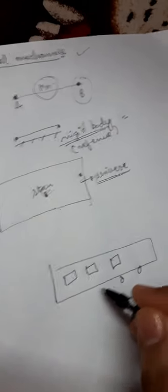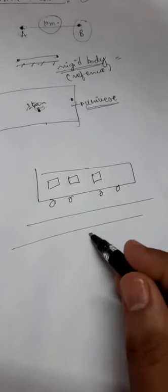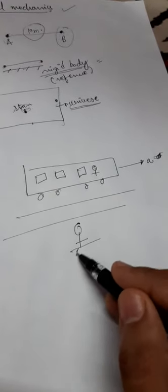The next thing classical mechanics says is really beautiful. If there is a train here — this is my train, with wheels, on a track — there is a person standing outside this train. This train is moving with an acceleration A equals F over M, or whatever you want to calculate. There is a person sitting inside this train and a person standing outside on the platform, on the Earth's surface.